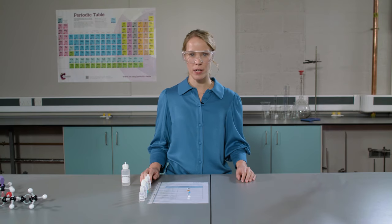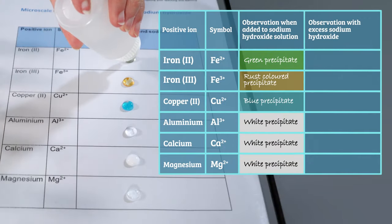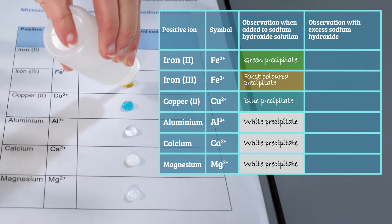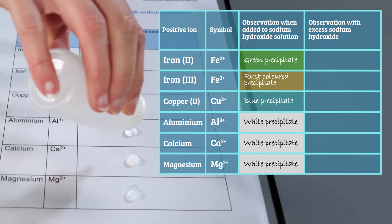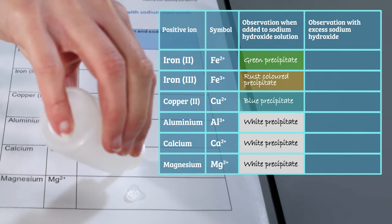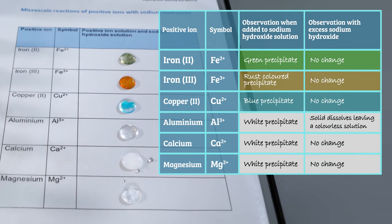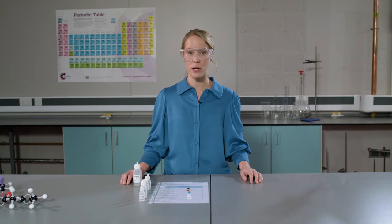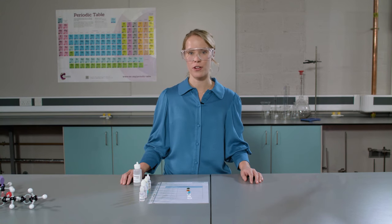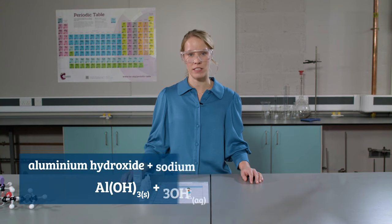An advantage of this microscale experiment is that it provides another way to capture the results before I move on. It is easy to knock the paper, so I would suggest you take a photo on your phone and draw up the results table from the photo. Next I'm going to add excess sodium hydroxide to all of the solutions and observe carefully what happens. When excess sodium hydroxide is added to a sample of aluminium hydroxide, it dissolves to give a sample of sodium aluminate. This provides us with a positive test for aluminium. You may want to take another photo of your results here, but really you just need to remember that this is the positive test for aluminium.